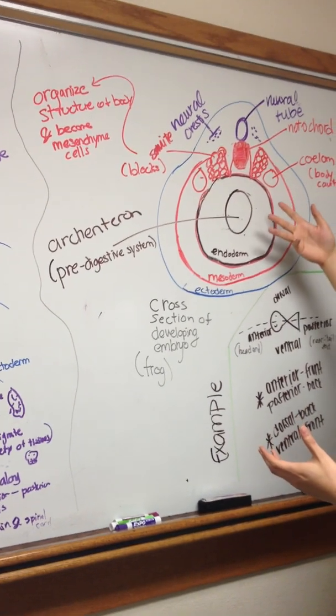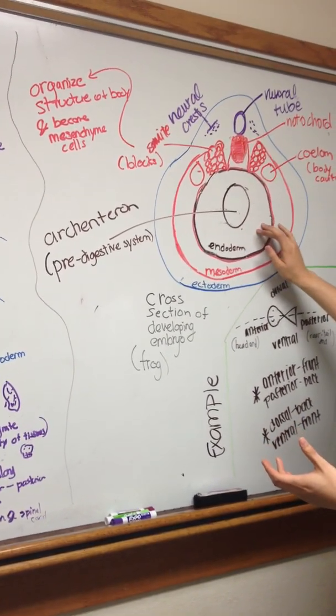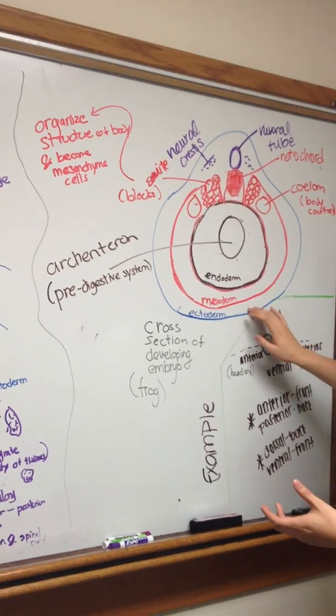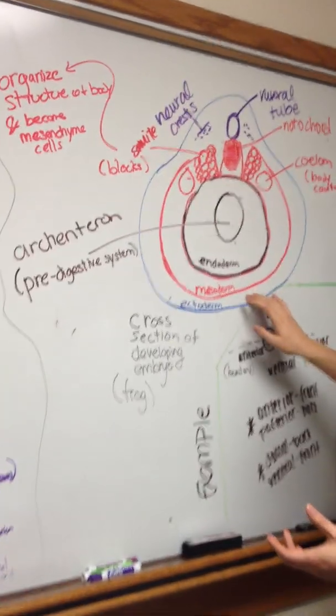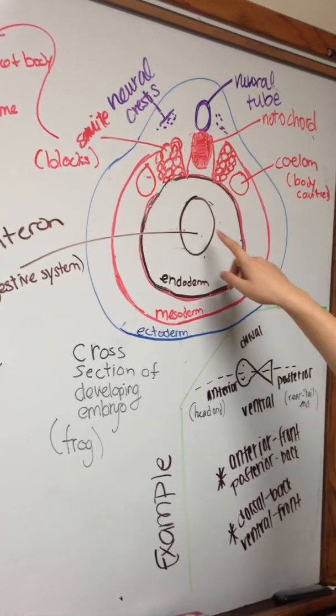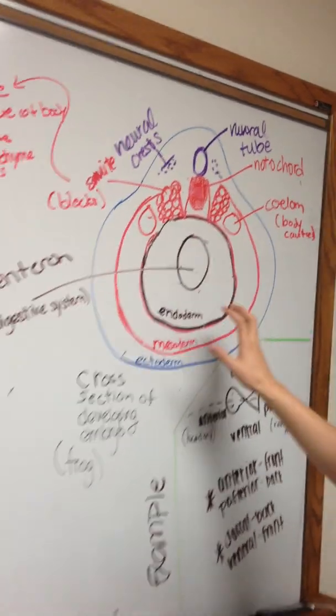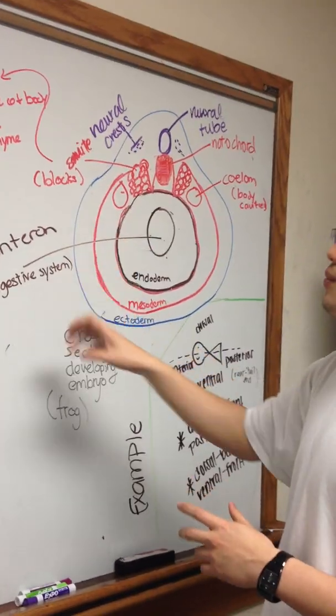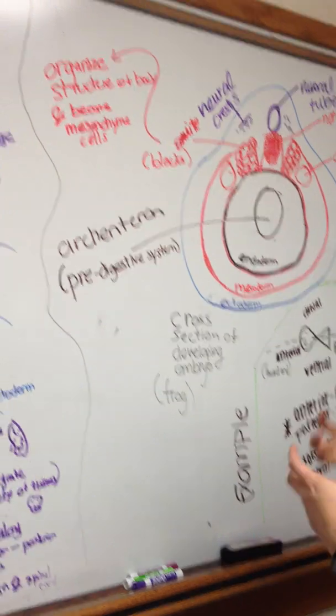We have three germ layers. The inner one is the endoderm, the second one is the mesoderm, and the outer layer is called the ectoderm. In the endoderm, we also have the developing structure of an archenteron, which is the pre-digestive system.